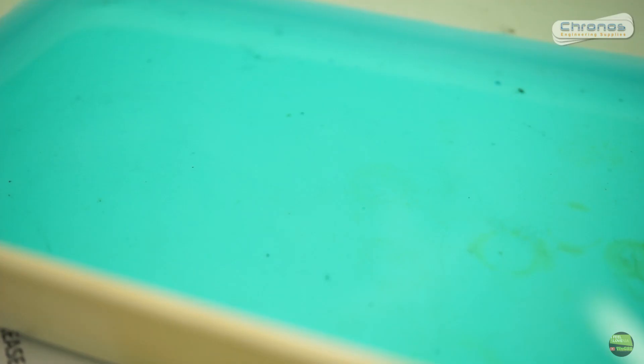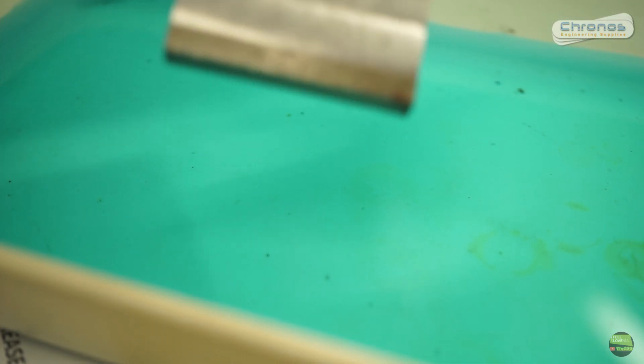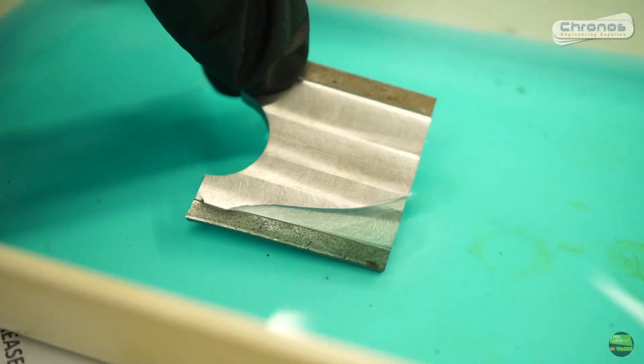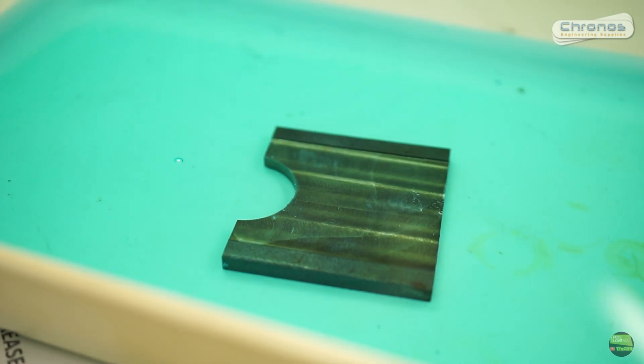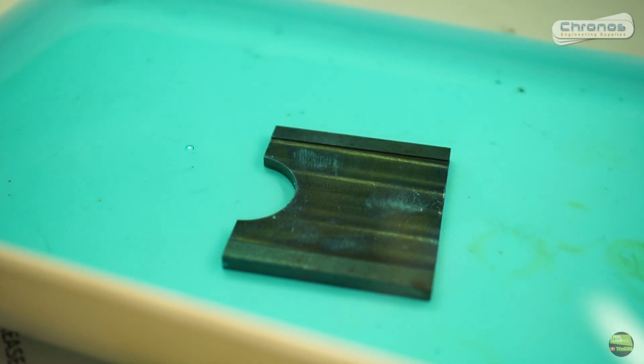Before we put steel into blackening solution, parts need to be clean so there's no traces of grease, oil, rust or any other dirt to get the best result. But I want to try the difference. So that piece has one part of surface freshly milled, and the other part is covered with protective grease and there's also a bit of rust.